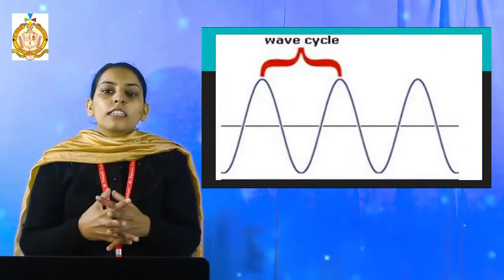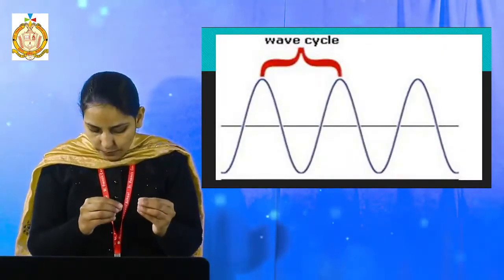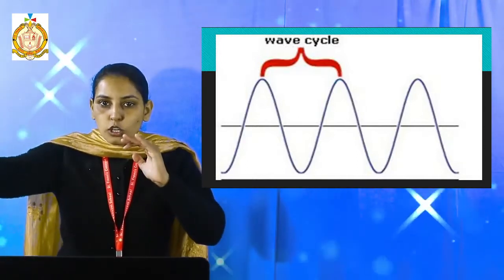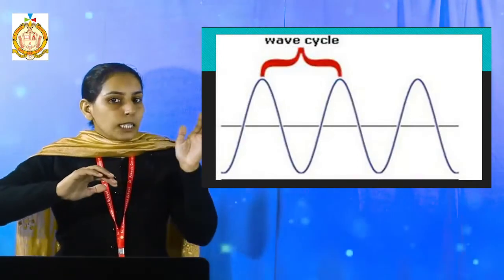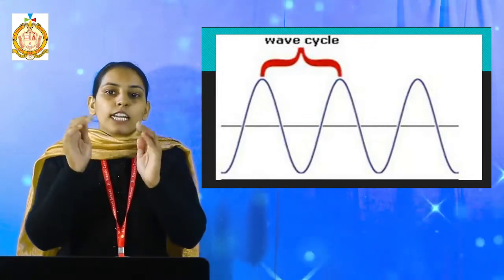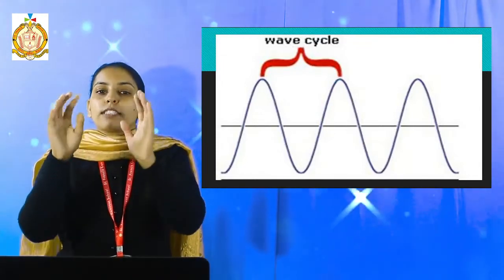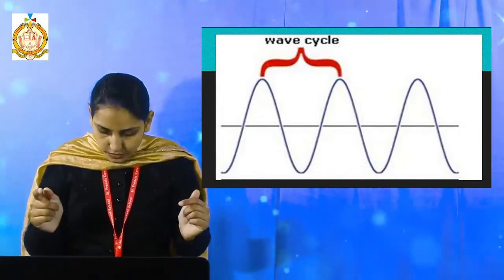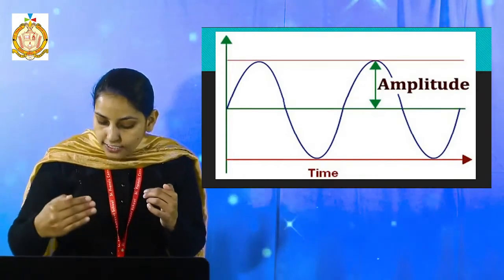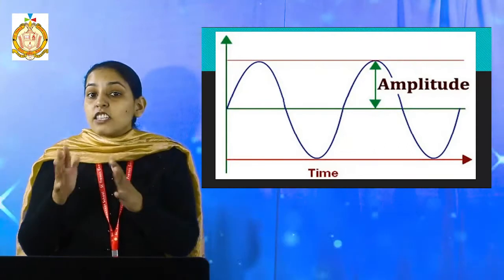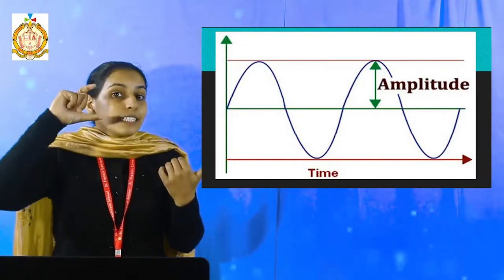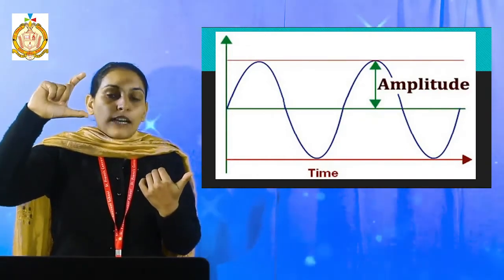First one is the cycle. A cycle is formed from one compression to the next compression — that is called the cycle. As seen in the picture, when there is an upper part, that is called the compression. The distance between the two compressions is called the wave cycle. Next is amplitude. Amplitude is the greatest distance of vibrating particles, and it is denoted by capital A. As shown in the figure, amplitude is the greatest distance measured by the peak.